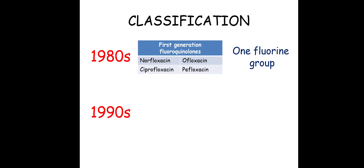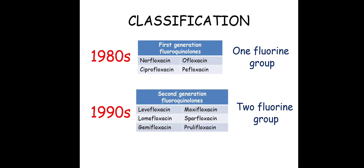After a decade, around the 1990s, two fluorine groups were added to the quinolone and we got the second generation fluoroquinolones. Examples include levofloxacin, lomefloxacin, gemifloxacin, moxifloxacin, sparfloxacin, and prulifloxacin. As compared to first generation, these second generation fluoroquinolones showed further extended antimicrobial activity to gram-positive cocci and anaerobes.